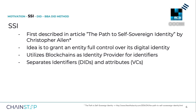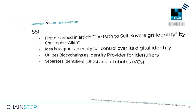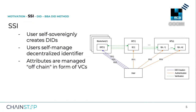Let me show you an example of how authentication works in SSI. A user self-sovereignly creates one or more DIDs on a SSI-enabled blockchain. If one then wants to authenticate, one presents one's DID to the service one wants to authenticate to. To check the authenticity of the DID and to ensure that the user is indeed the controller of the DID, the service initiates a challenge-response workflow. To verify the signed response, the service resolves the DID and gathers the public key of the signature from the blockchain.